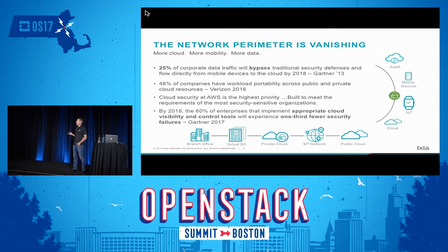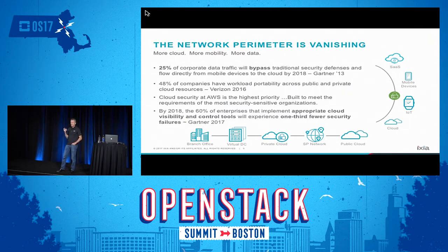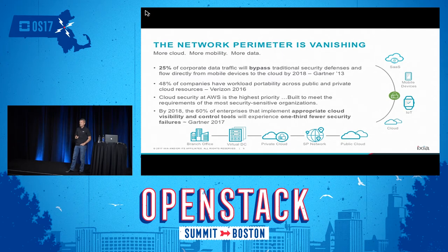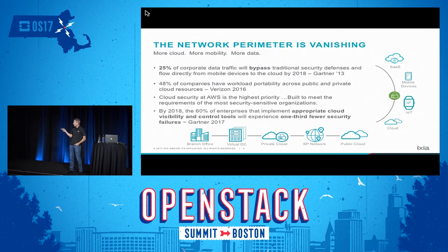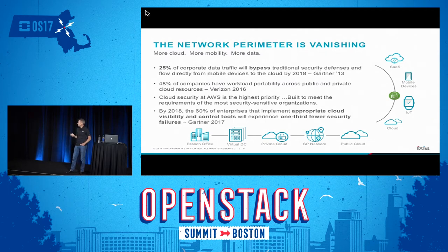When you look at the numbers, it may not make you feel much better. By 2018, according to some analysts, 25% of traffic would go directly from the mobile device to the cloud, without going through your security devices or security defenses — a scary number. And when you have players like AWS who recognize that security is the highest priority, that really says something. By 2018, about 60% of enterprises that implement appropriate cloud visibility and control tools will experience one third fewer security failures. So it's very important to do something.